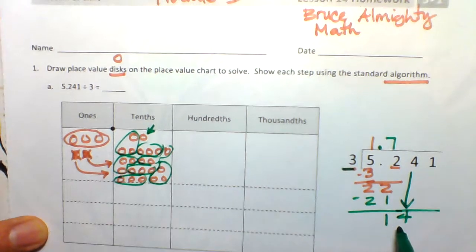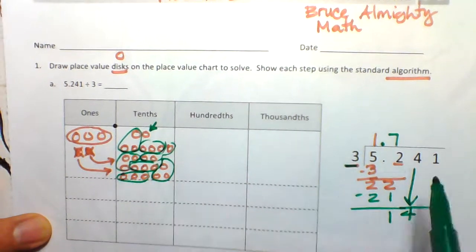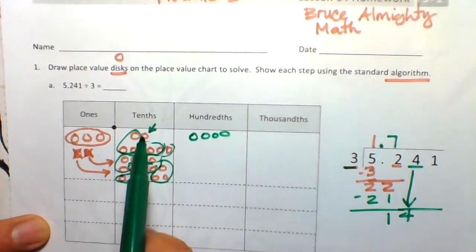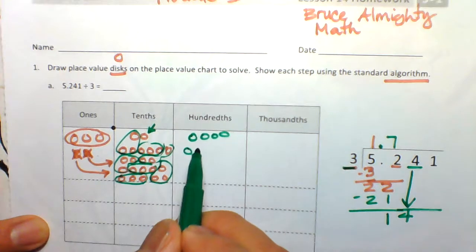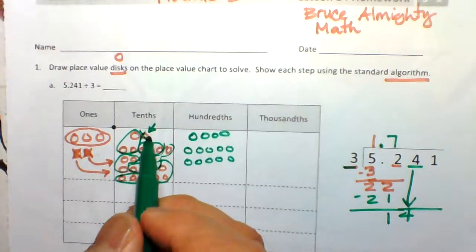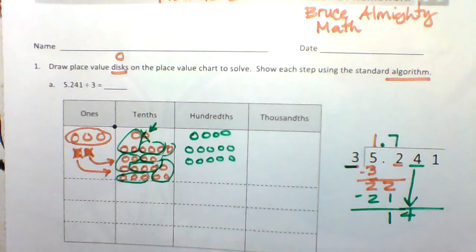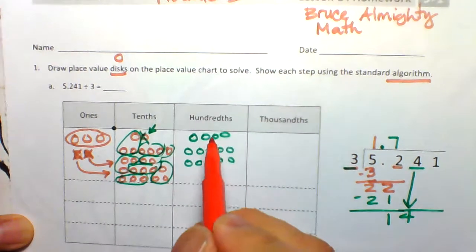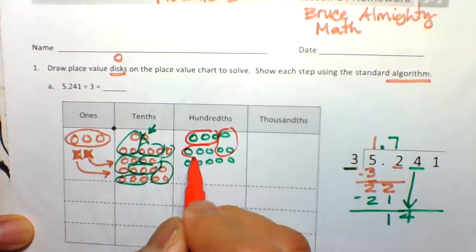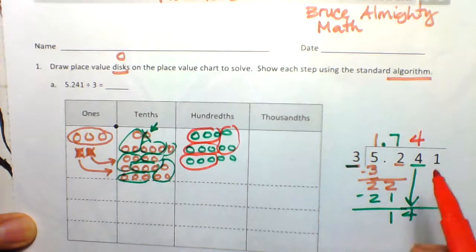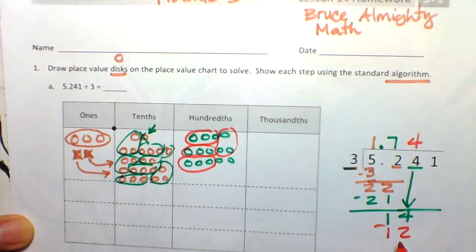There is 1 tenth left, and that tenths remainder is going to be converted into hundredths. We already divided that 2, so now we divide the 4. We have 4 hundredths here, plus the 1 tenth converted into 10 hundredths, giving us 14 hundredths total. How many groups of 3 can we make out of 14? The answer is 4. So 4 times 3 equals 12, and the remainder is 2.